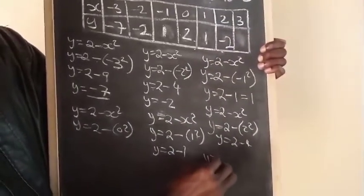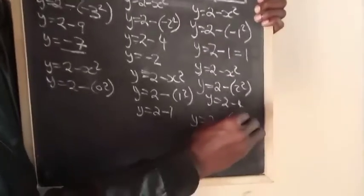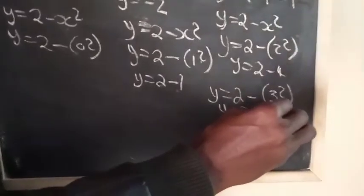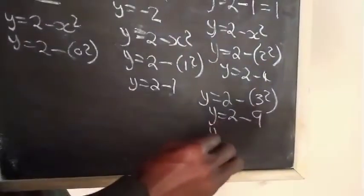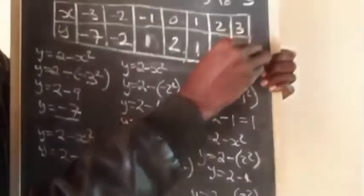Next, when x equals 3: Y equals 2 minus 3 squared. So Y equals 2 minus 9. Then Y equals minus 7.